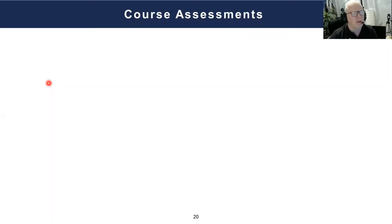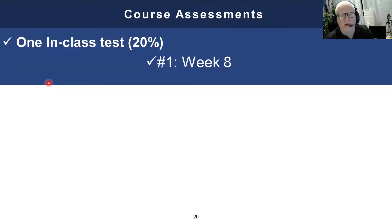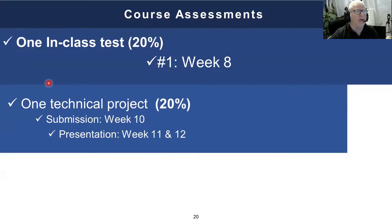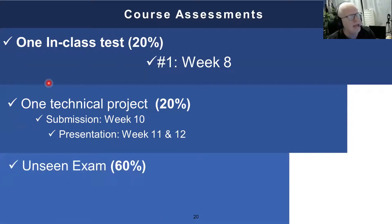Let's go to the assessment. We have two or three types of assessment. First, one in-class test in week eight with a 20% weight. We also have a project with a 20% weight — I will give detailed discussion about the project either in this recorded lecture or during your first on-campus day next Tuesday. Finally, we have the unseen exam with 60% weight. This is the overall mark distribution for the current module.